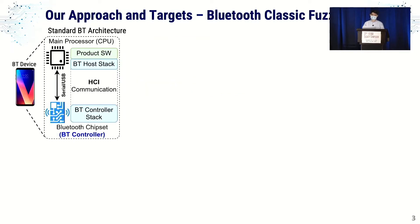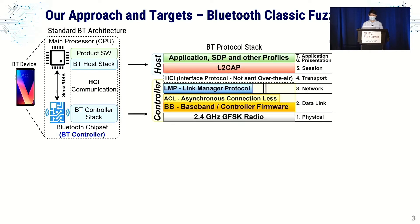To highlight exactly what our target is and where we locate in the state of the art, we can look at the standard Bluetooth architecture. Usually you have the main processor — your smartphone — and the external Bluetooth controller. Notably, the protocol stack is organized with a separation between the host layers, which reside on your smartphone, and the controller, which is a separate closed-source controller. This controller is our main objective in this work.